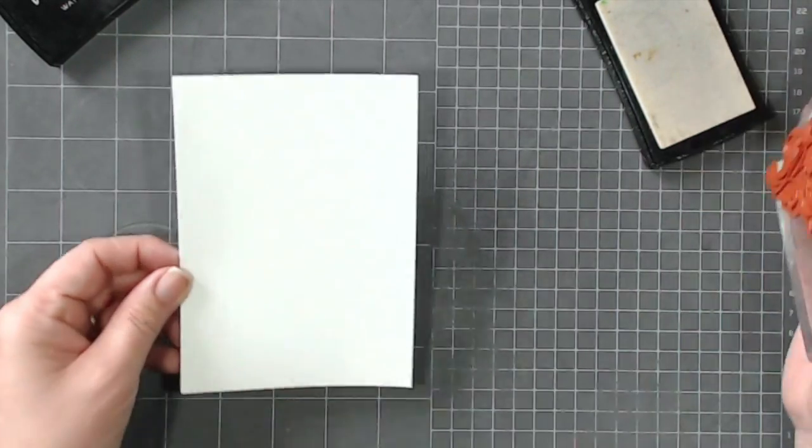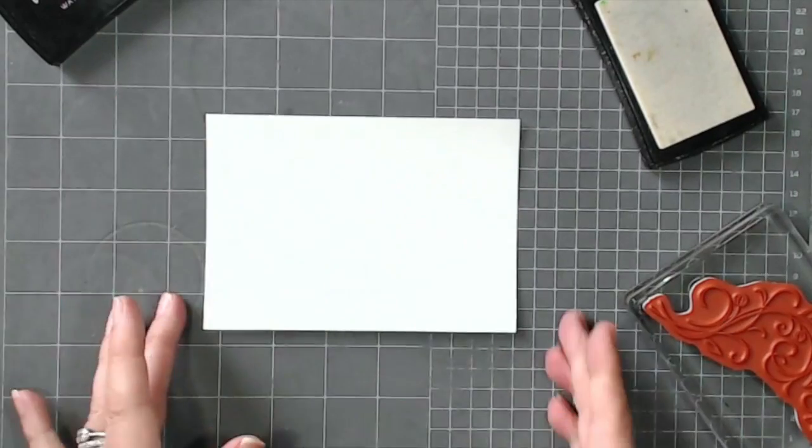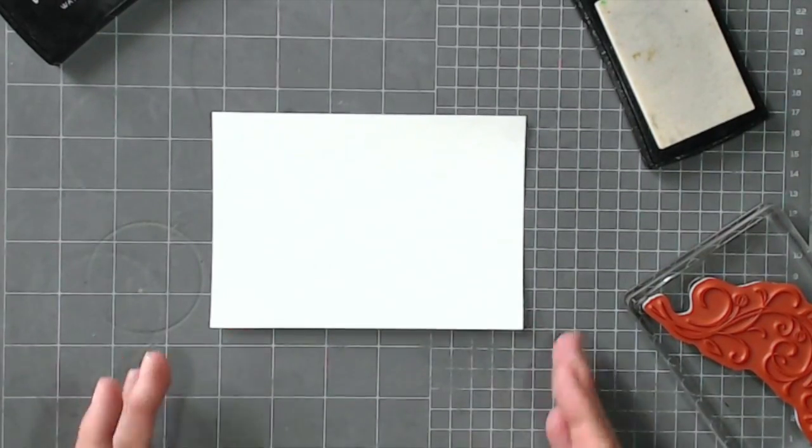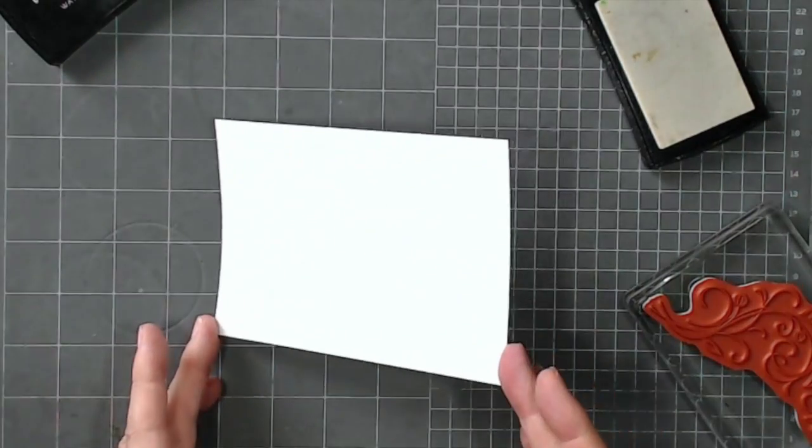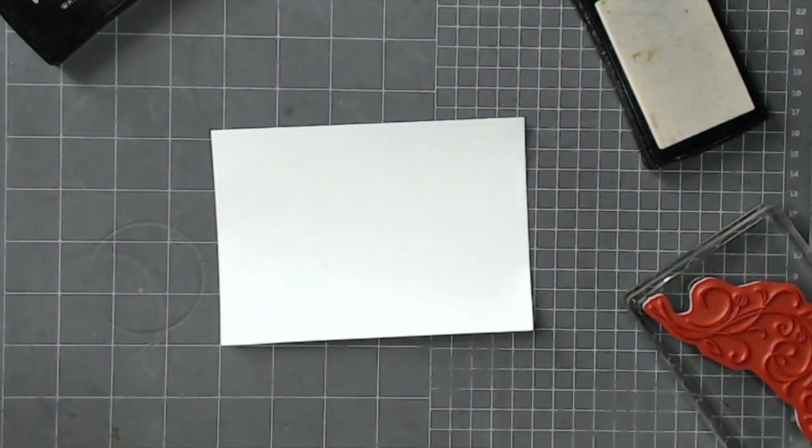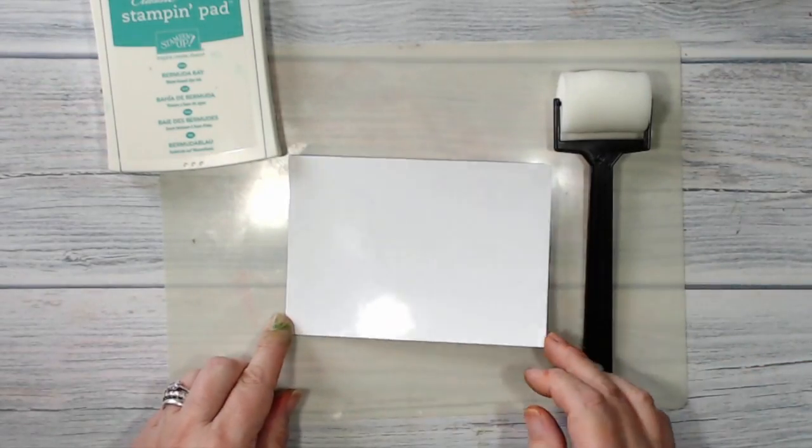I think that's about done so I'm going to put that on one side to dry for about 20 minutes to half an hour and then we're going to come back to it. So that's had about half an hour to dry.